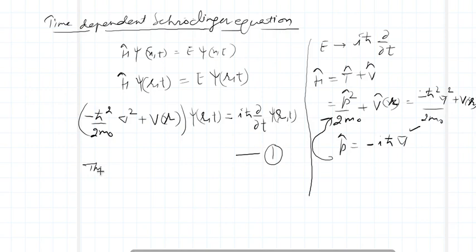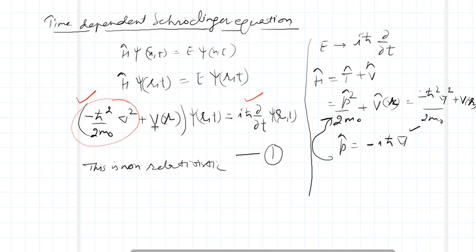This equation is non-relativistic. If we look at it, we see that momentum-squared is sitting on one side and energy on the other, in the sense that momentum-squared is effectively equivalent to an energy-like term. This motivates us to recall the relativistic energy-momentum relationship.